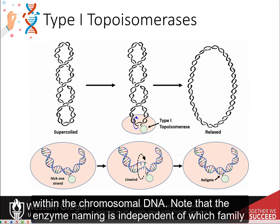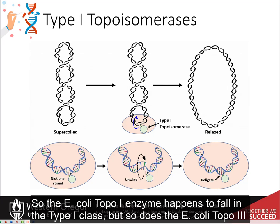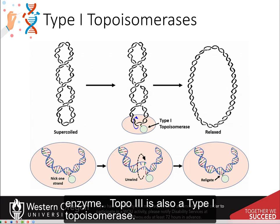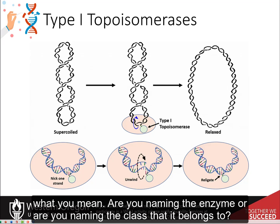Note that the enzyme naming is independent of which family they belong to — these are two separate things. The E. coli topo-1 enzyme falls in the type 1 class, but so does the E. coli topo-3 enzyme. Topo-3 is also a type 1 topoisomerase. The naming is a little unfortunate and can be confusing, so always be sure to clarify whether you are naming the enzyme or the class that it belongs to.